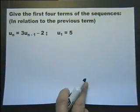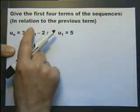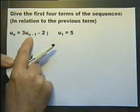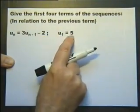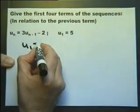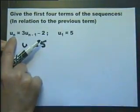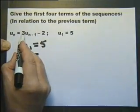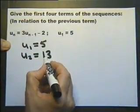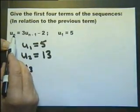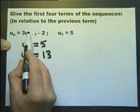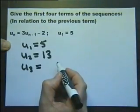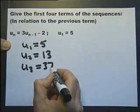Give the first four terms of this sequence where the term is three times the previous term subtract two. The first term is five. When n equals two, the next term is three times five which is fifteen, subtract two gives thirteen. When n equals three, three times thirteen is thirty-nine, subtract two gives thirty-seven. And so on — each new term is three times the previous term subtract two.